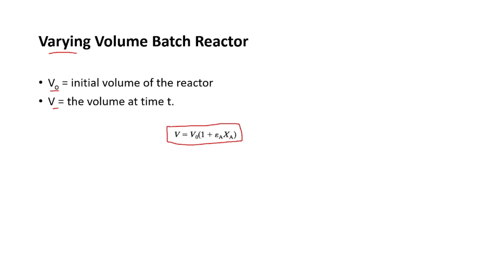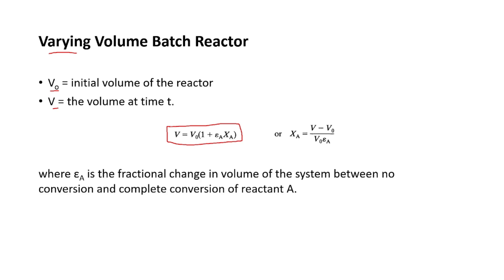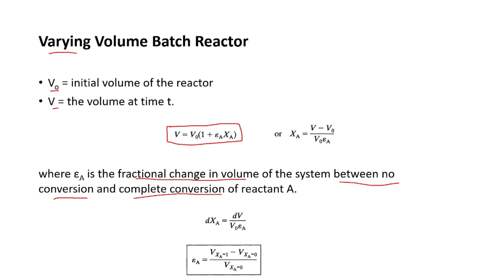The fractional change in volume εa is defined as the fractional change in volume between zero conversion and complete conversion of reactant A. Mathematically: εa = (V at xa=1 minus V at xa=0) / (V at xa=0). That is, the volume at complete conversion of A minus the volume at no conversion, divided by the volume at no conversion.